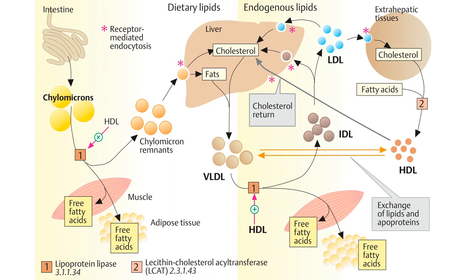Fate of free fatty acids — the free fatty acids derived from the hydrolysis of triacylglycerol may either directly enter adjacent muscle cells or adipocytes, or be transported in the blood in association with serum albumin until taken up by cells. Serum albumin is a large glycoprotein secreted by the liver that transports a number of primarily hydrophobic compounds in the circulation, including free fatty acids and some drugs. Most cells can oxidize fatty acids to produce energy. Adipocytes can also reesterify free fatty acids to produce triacylglycerol molecules, which are stored until the fatty acids are needed by the body.